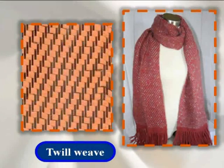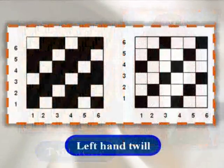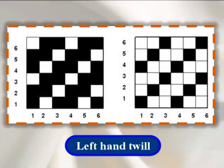Twill repeat is completed in three warp and three weft yarns. After the interlacement, the fabric shows diagonal lines running at 45 degrees. And if these diagonal lines run from lower right to upper left, then it is called left hand twill.